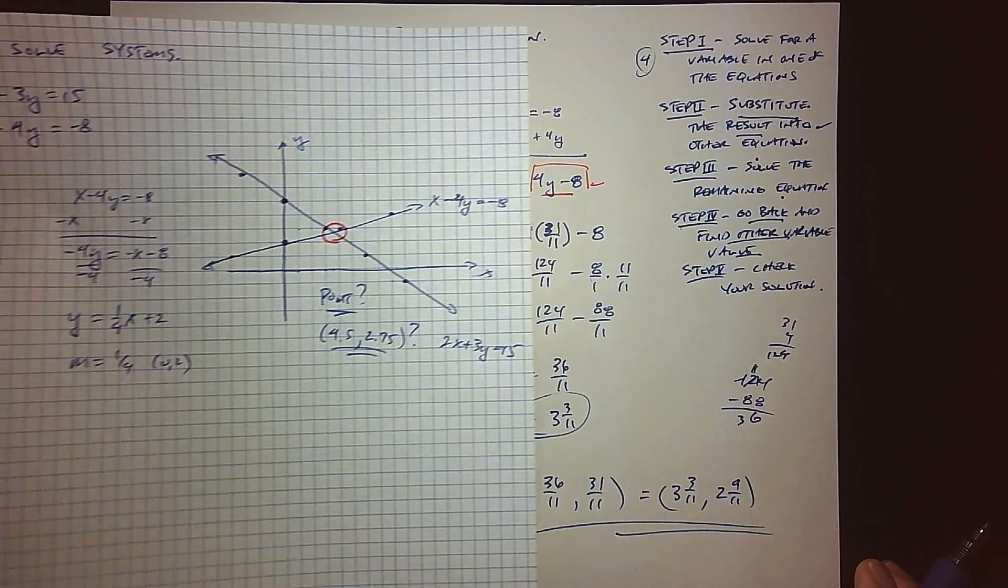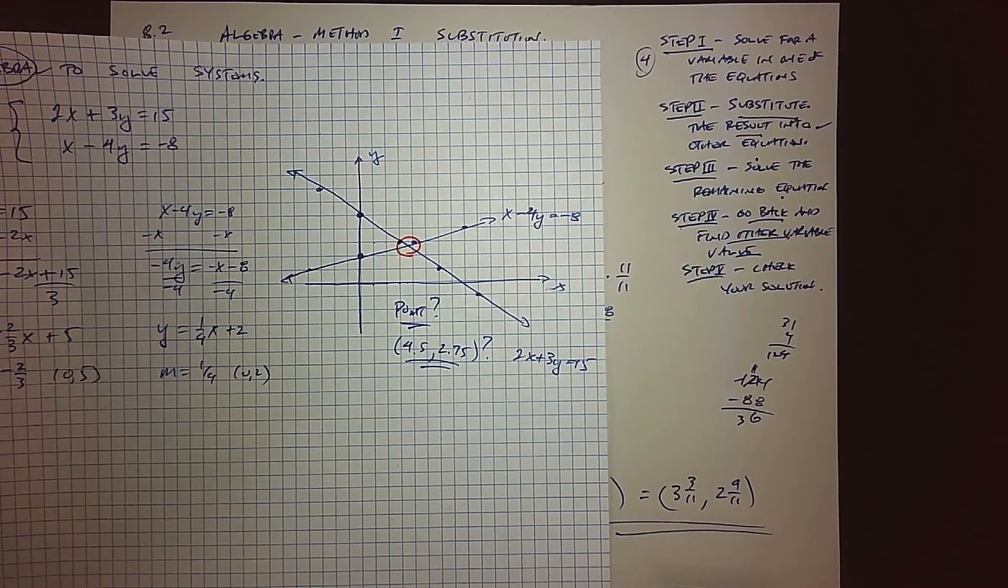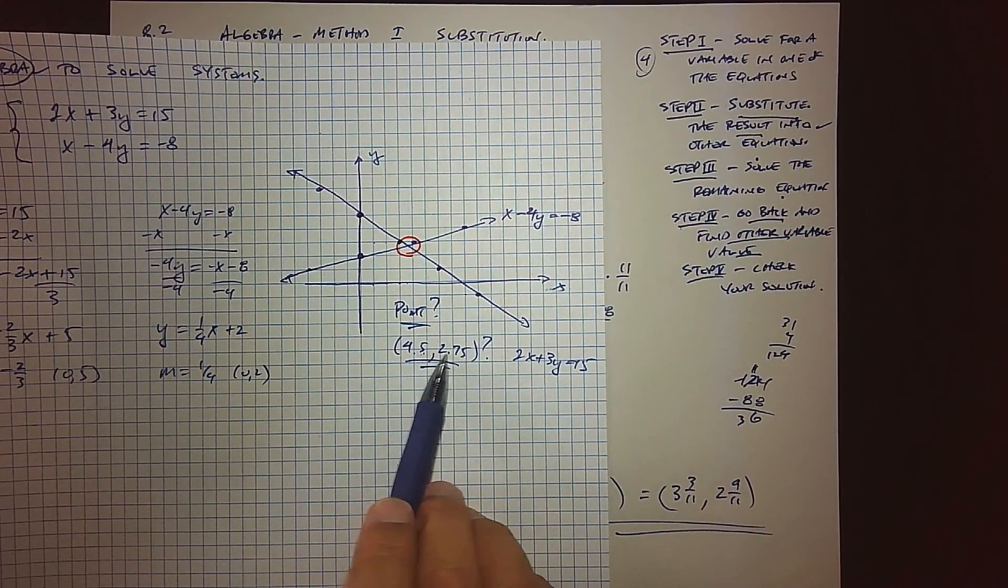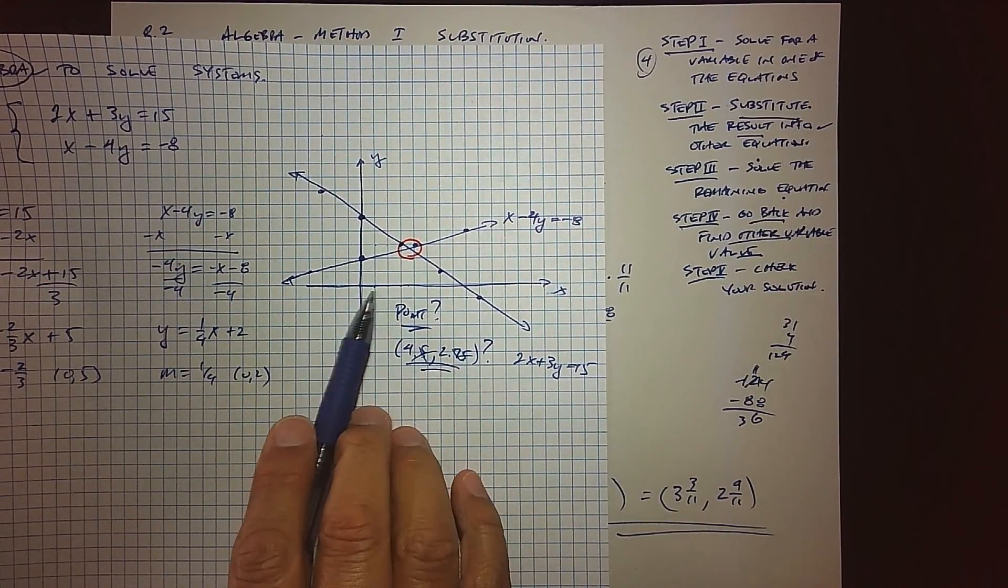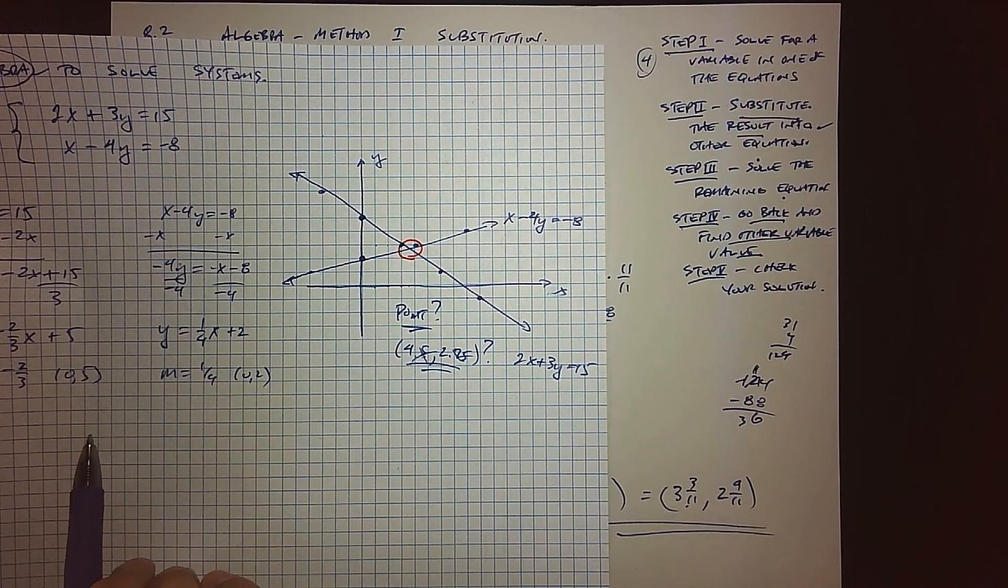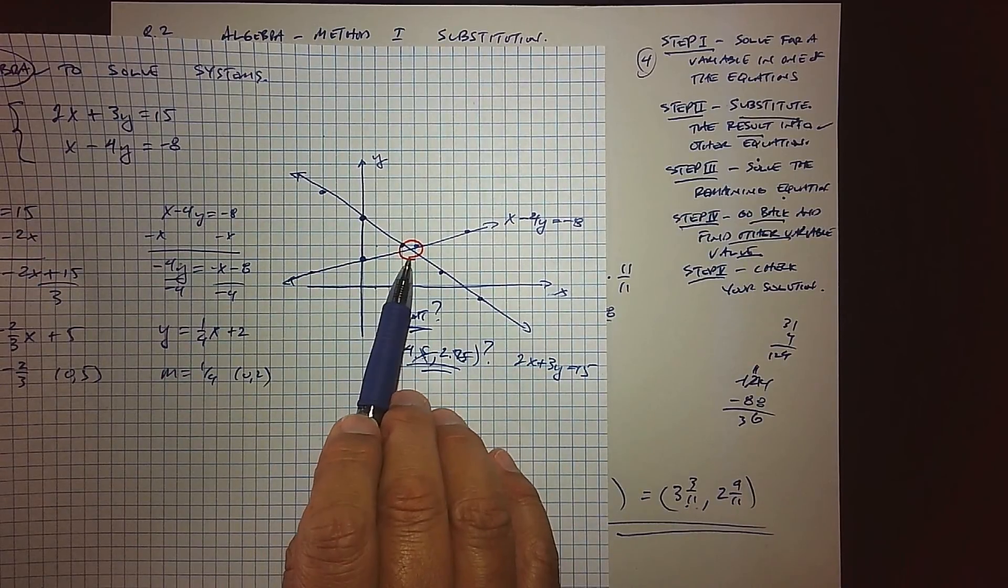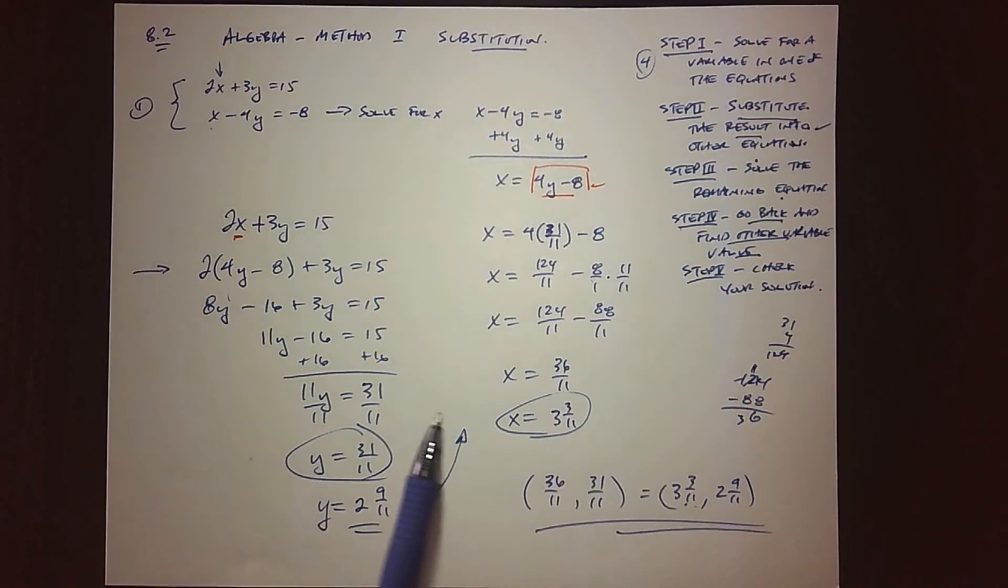We can kind of see that we were way off in terms of these values—we were guesstimating. But now I know the x-coordinate is 3 and 3/11 and the y-coordinate is 2 and 9/11. We now have an accurate answer to the ordered pair that we can see as our solution.